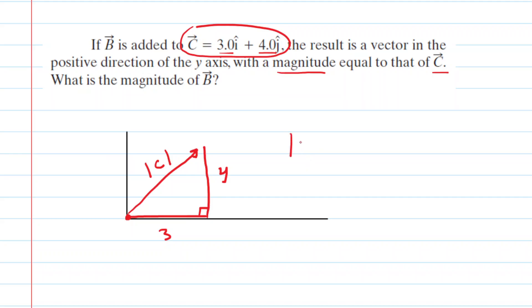So we can use the Pythagorean theorem. We could say that the magnitude of C squared is equal to 3 squared plus 4 squared. If we simplify the right hand side we're going to have 9 plus 16 which is 25, and then to solve for the magnitude of C we would just take the square root of both sides. We can see that the magnitude of C is equal to 5.